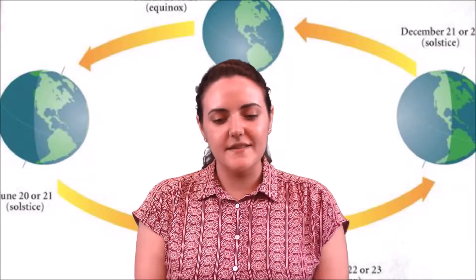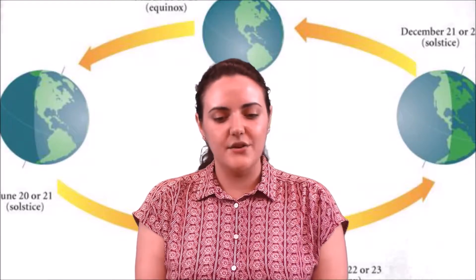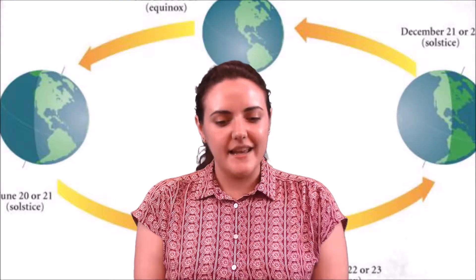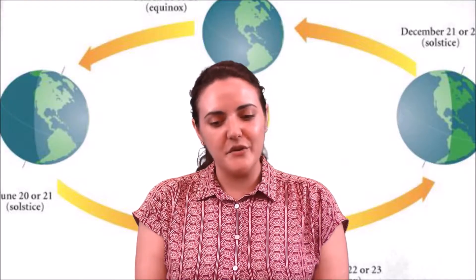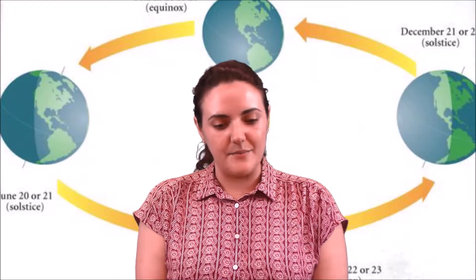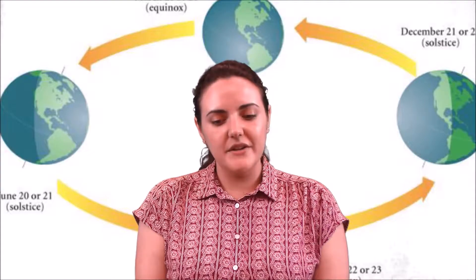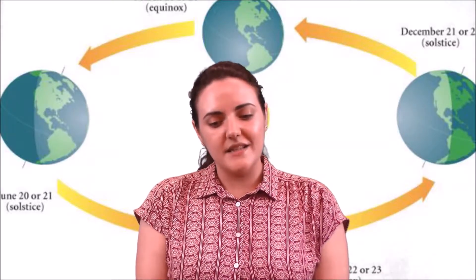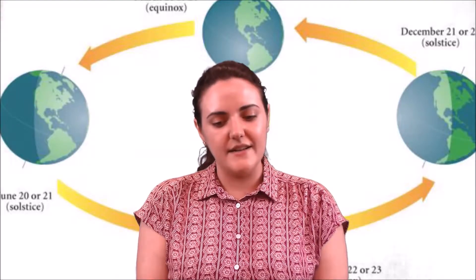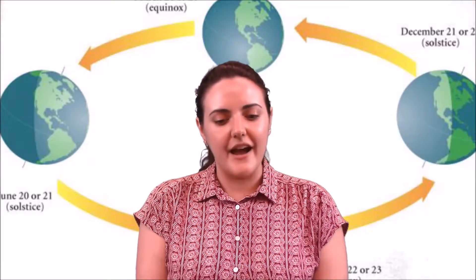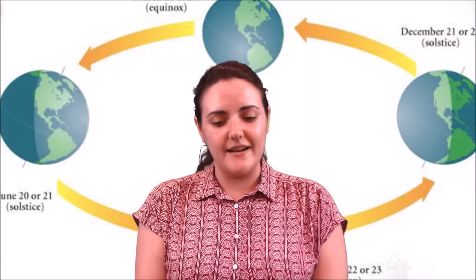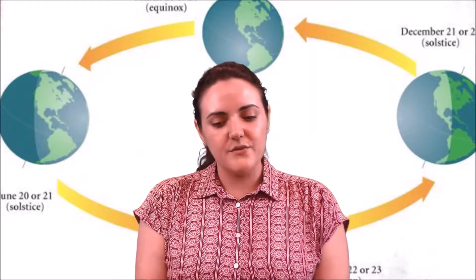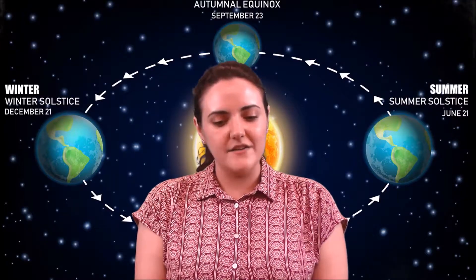The seasons occur because the earth's axis of rotation is not perpendicular to its orbital plane — the plane of the ecliptic — but currently makes an angle of about 23.44 degrees, called the obliquity of the ecliptic, and because the axis keeps its orientation with respect to an inertial frame of reference. As a consequence, for half the year the northern hemisphere is inclined toward the sun, while for the other half the southern hemisphere has this distinction. The two moments when the inclination of earth's rotational axis has a maximum effect are the solstices.